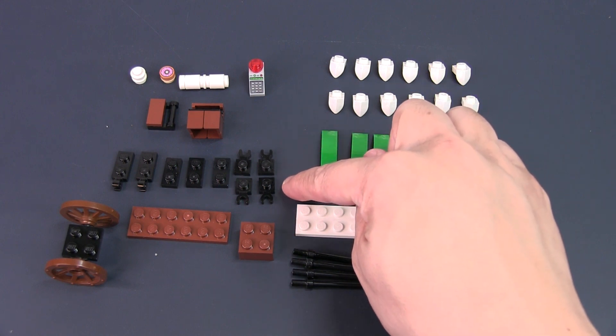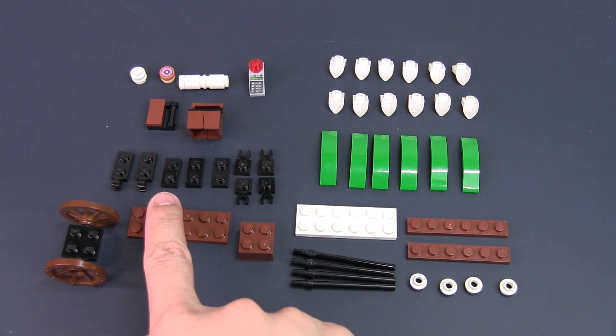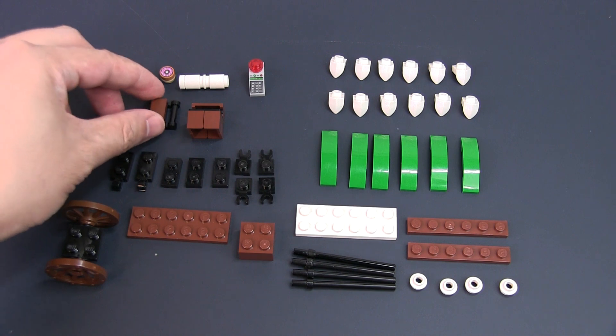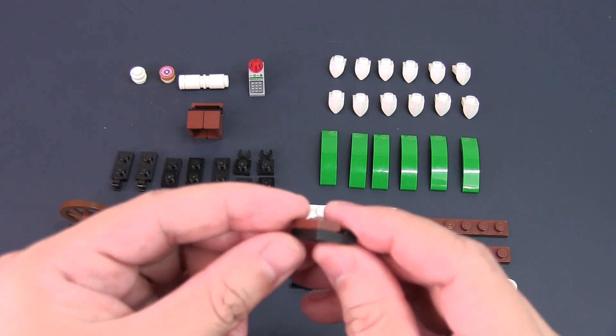4 modified brackets with clips on the side, 3 1x2 plates, 3 1x2 modified brackets with clips on the side, a modified plate with a bar, and a 1x2 tile over it.